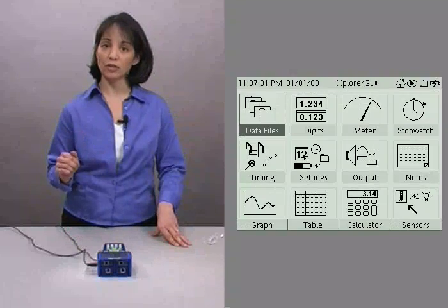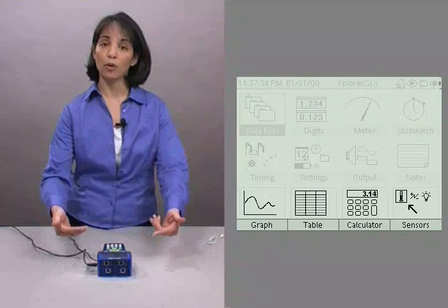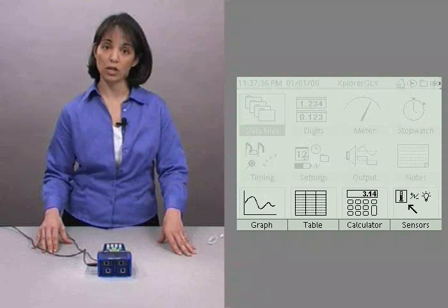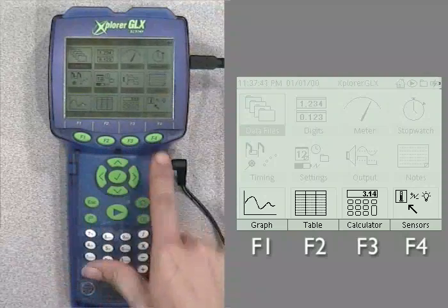For even easier access, the four most commonly used screens have been placed on the bottom row of the home screen and associated with one of the function buttons underneath it.